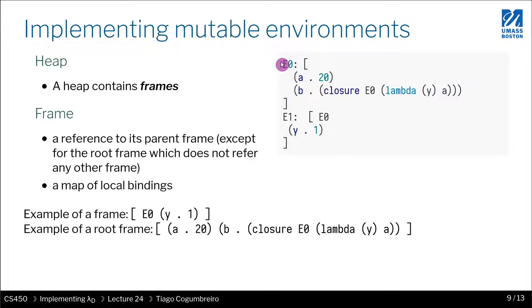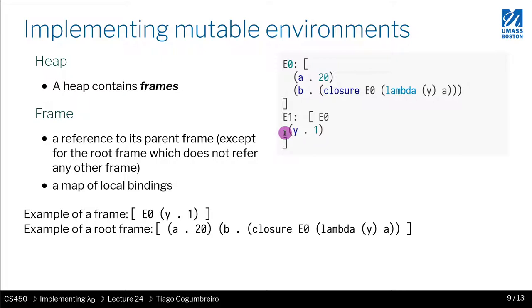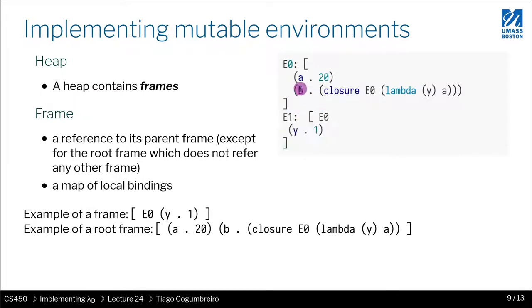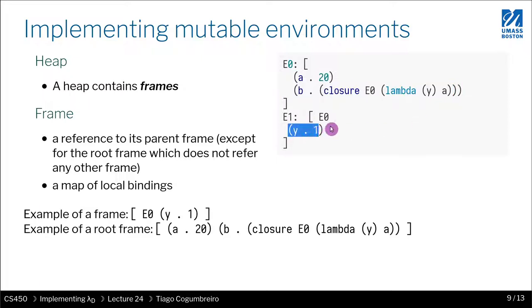A heap contains a heap of records. So when you're executing a record, the memory is laid out as follows. You have your keys in your heap — those are going to be frames. Each of these brackets is what we're trying to implement. So each frame has a hash table with key-value pairs and possibly a reference to a parent.